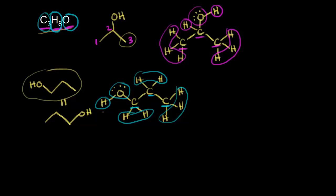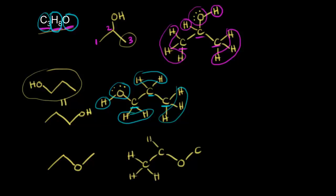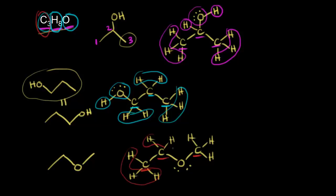Now let's draw one more. We can't just move the OH to another carbon, so we have to think of something else. This time we could put two carbons in a row with an oxygen in between, breaking up our carbon chain. So this would be carbon bonded to carbon, bonded to oxygen, bonded to carbon. Filling in hydrogens: three on the first carbon, two on the middle carbon, and three on the last carbon. I'll put lone pairs on the oxygen. Counting up: three carbons — C3. Three plus two is five, plus three is eight hydrogens, and one oxygen. So this is another structural isomer with molecular formula C3H8O.